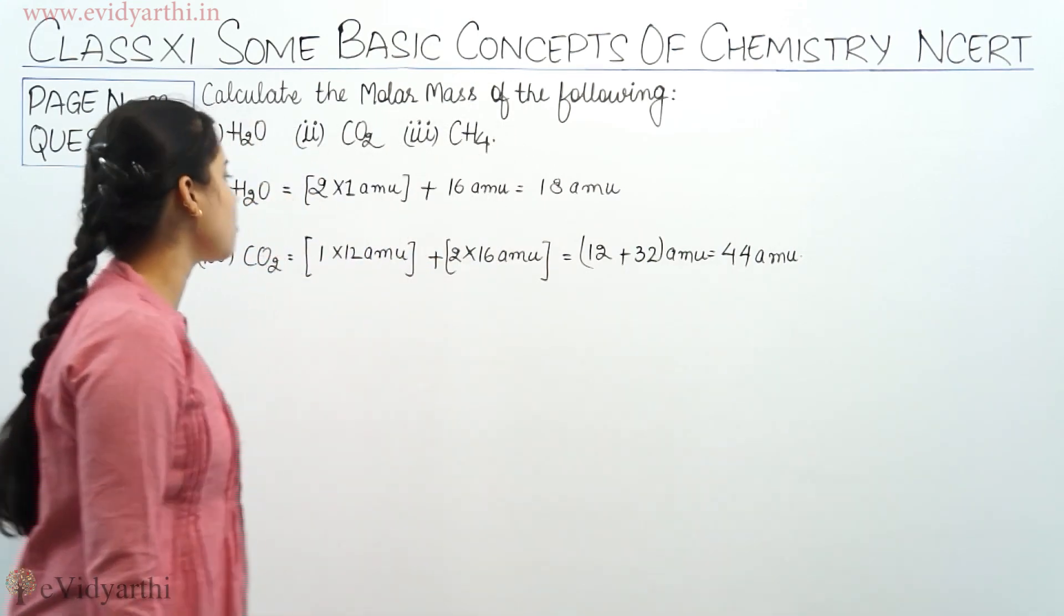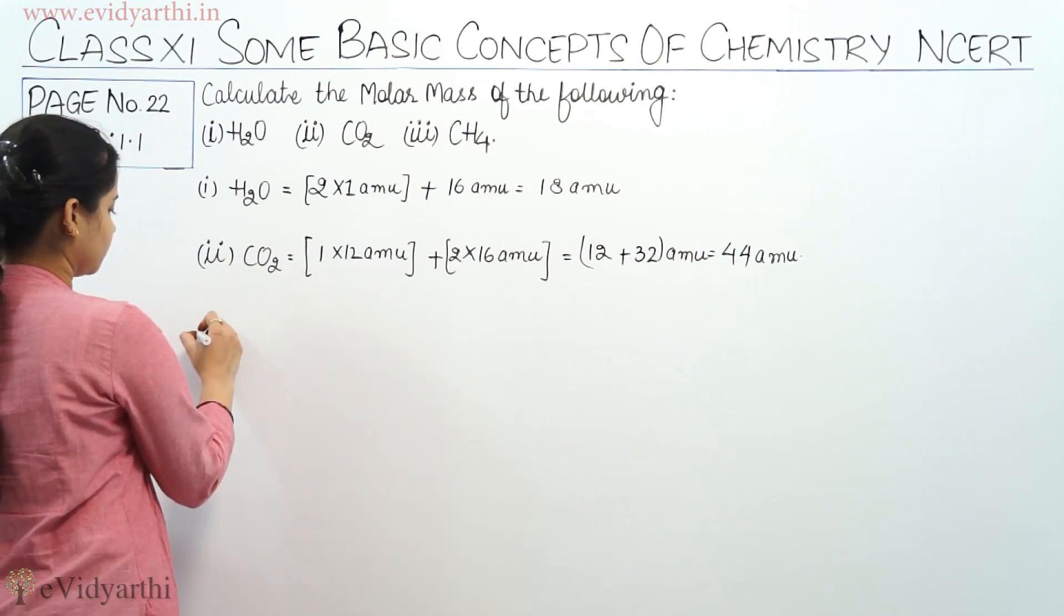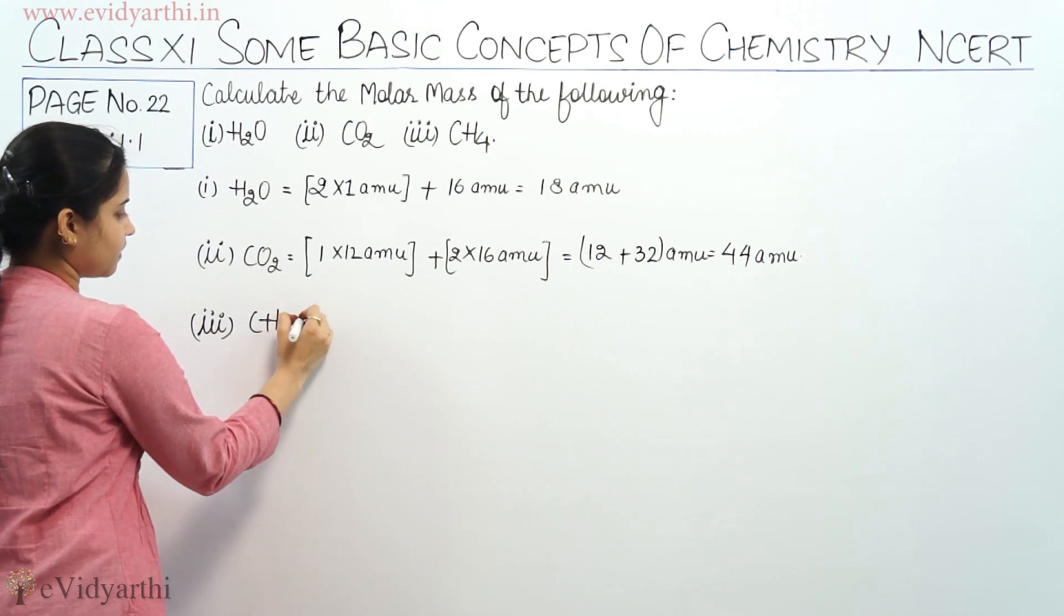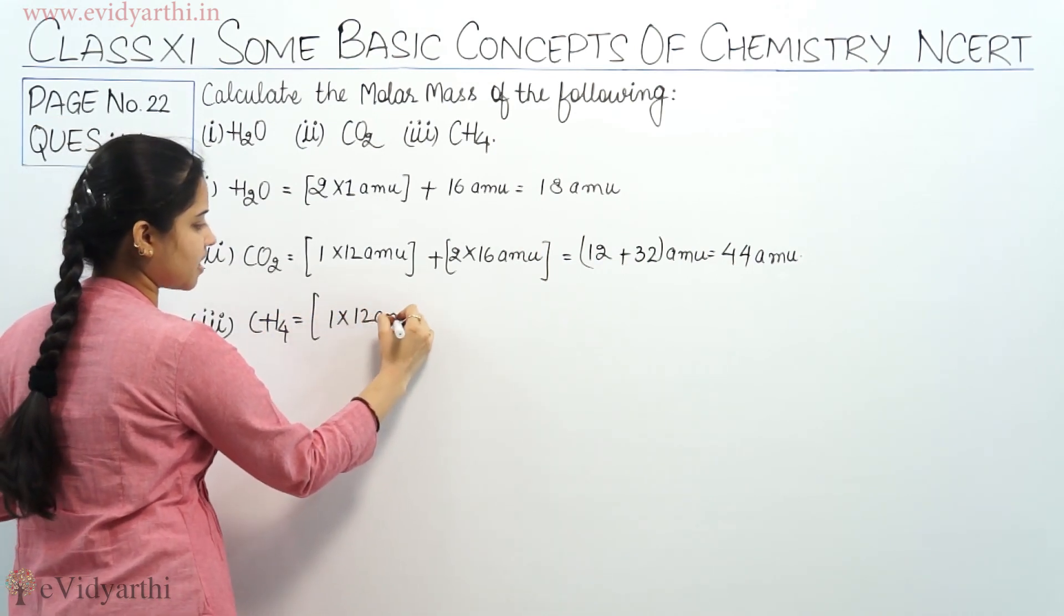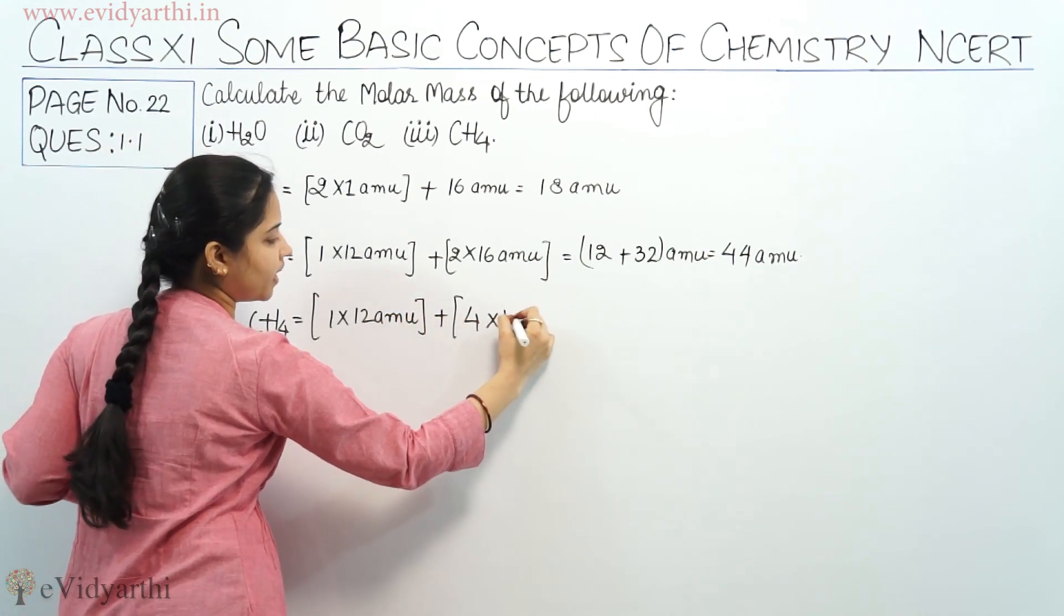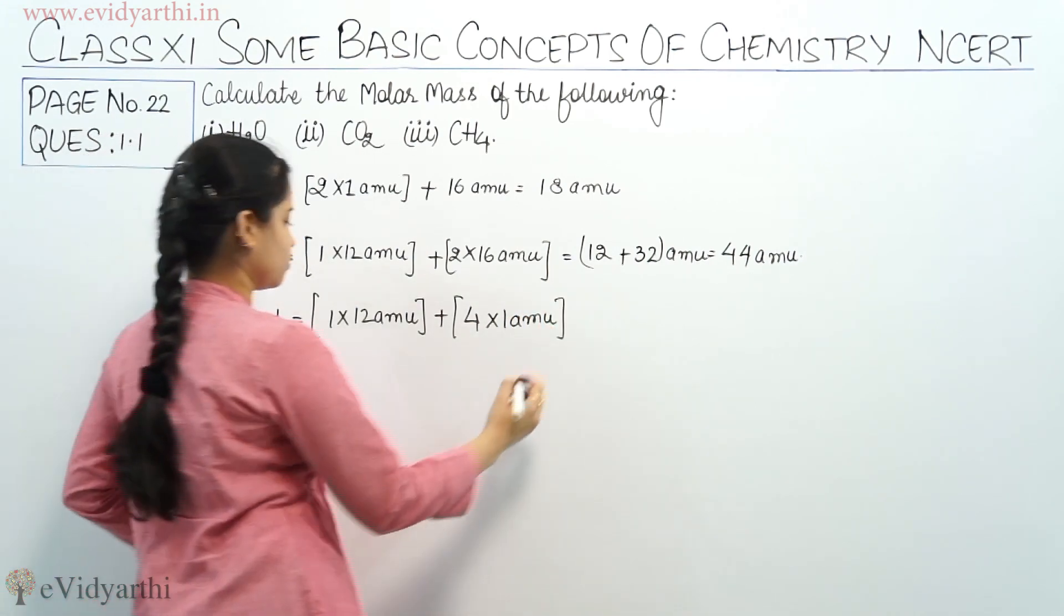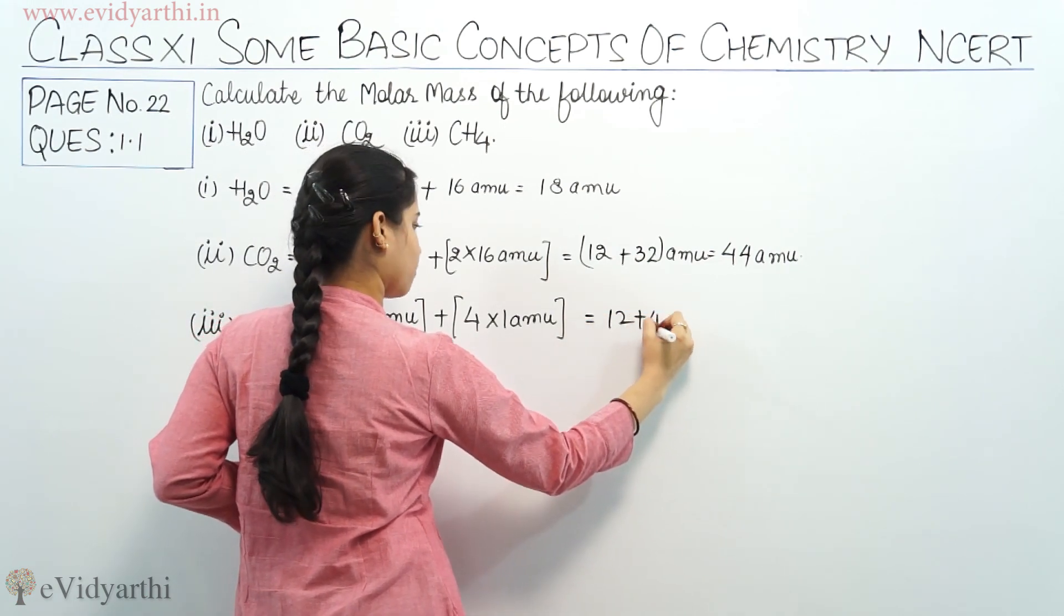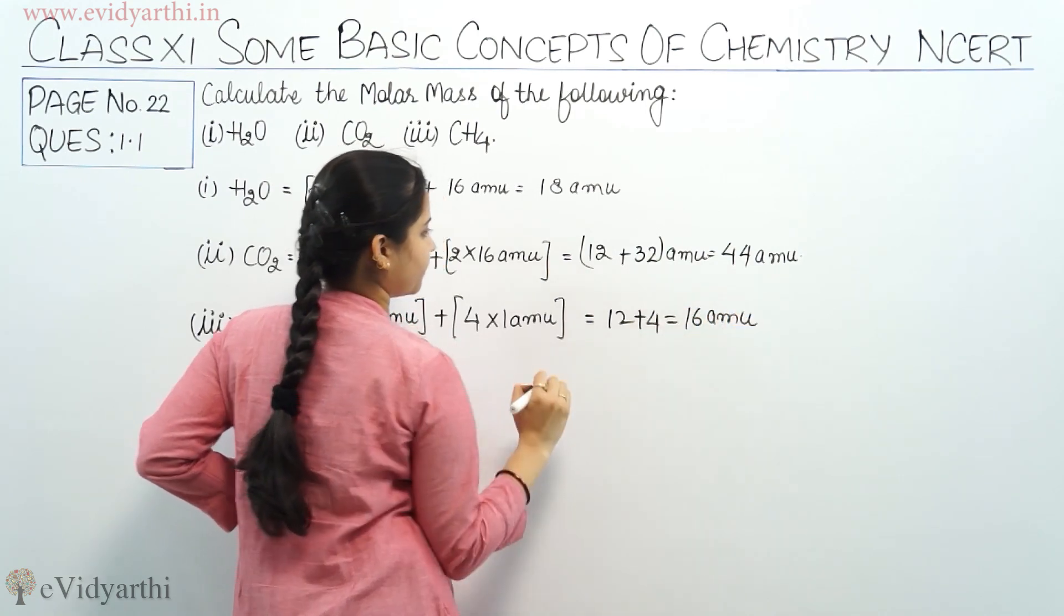Coming to the third part of this question, CH4. So 1 into 12 atomic mass unit plus 4 into 1 atomic mass unit because we are having over here 4 atoms of hydrogen. So it becomes 12 plus 4 is equal to 16 Amu.